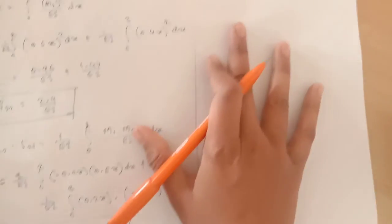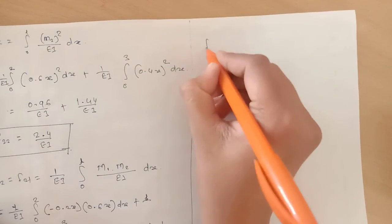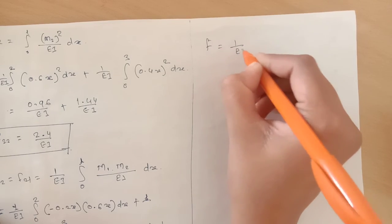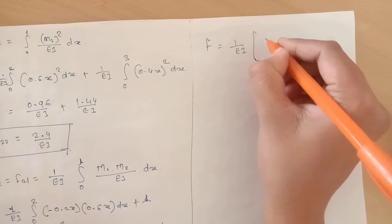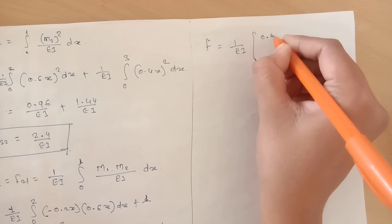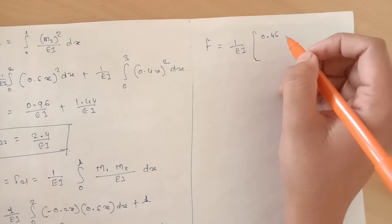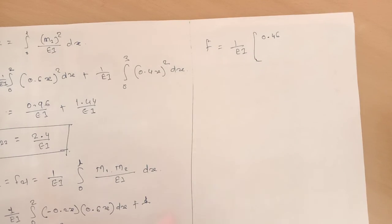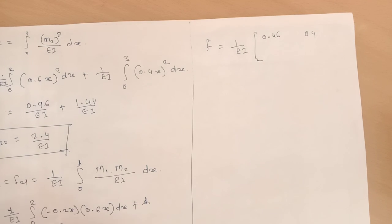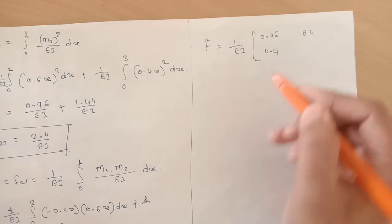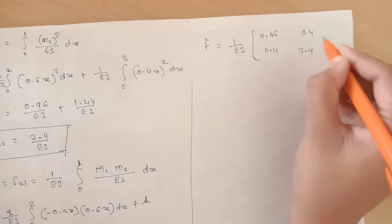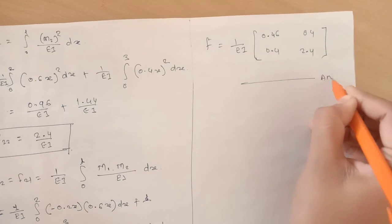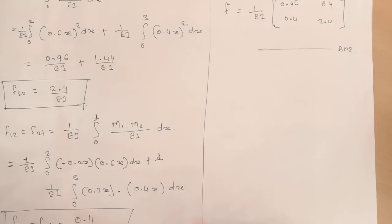The final flexibility matrix is: F = (1/EI) times the matrix [0.46, 0.4; 0.4, 0.4], where F11 = 0.46/EI, F12 = F21 = 0.4/EI, and F22 = 0.4/EI. This is our final answer. Thank you.